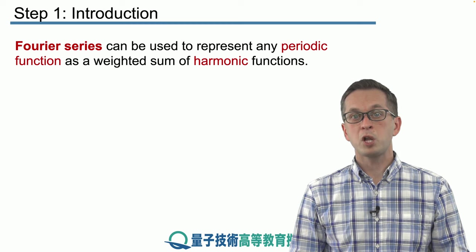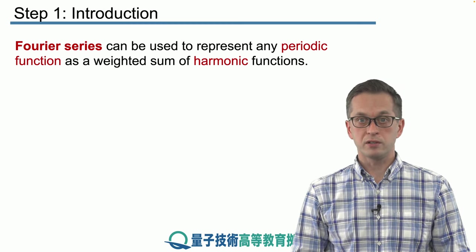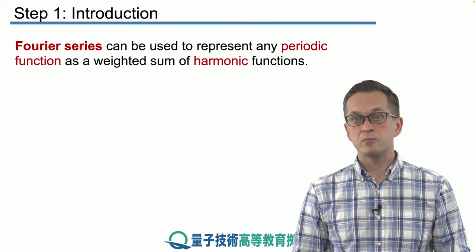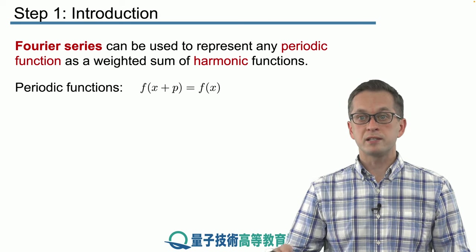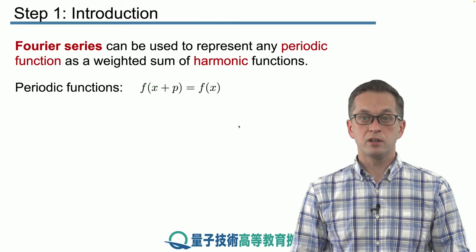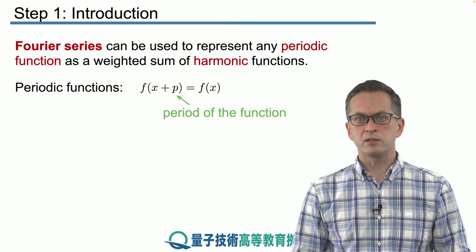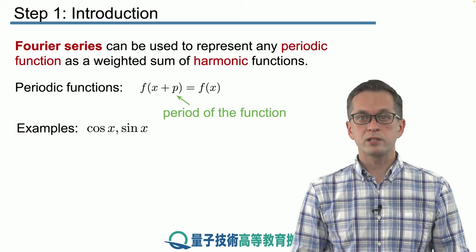And that's the idea behind Fourier series. A Fourier series is a representation of a periodic function as weighted sum of harmonic functions. Periodic in this sense means that the function repeats itself after some interval p, which is the period of the function. And we have seen many periodic functions. For example, the most simple ones are cosines and sines.